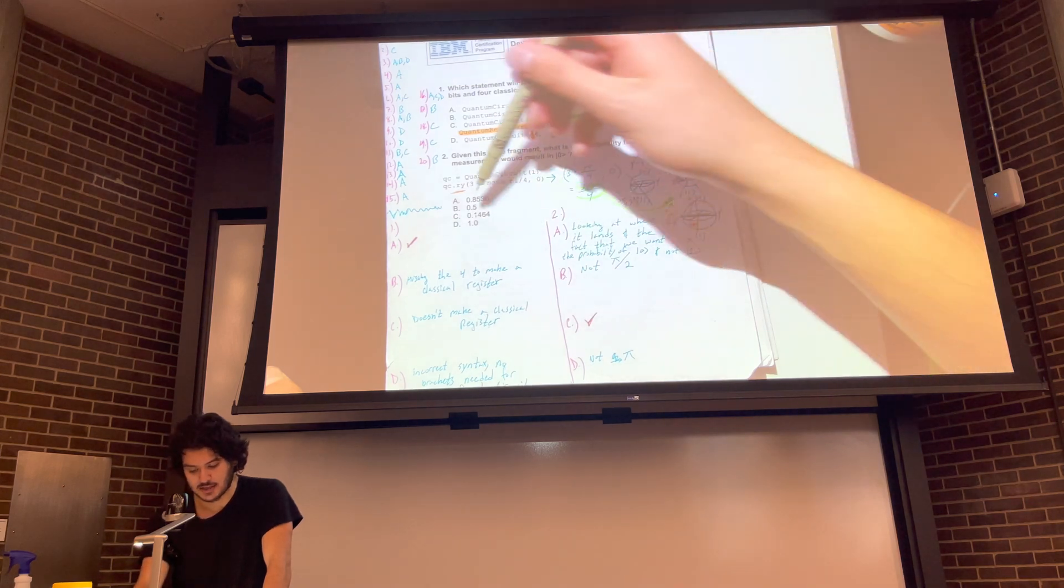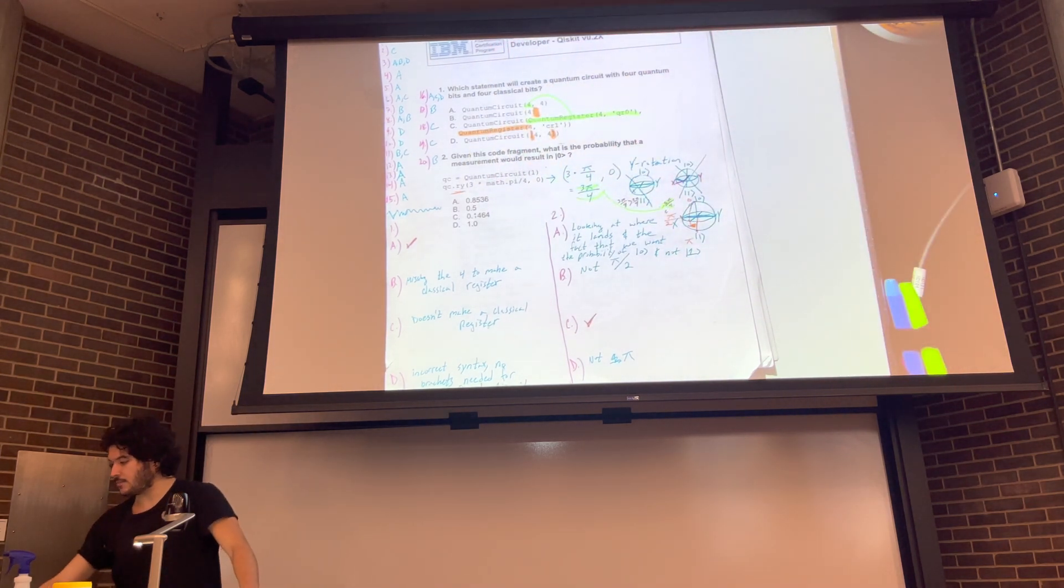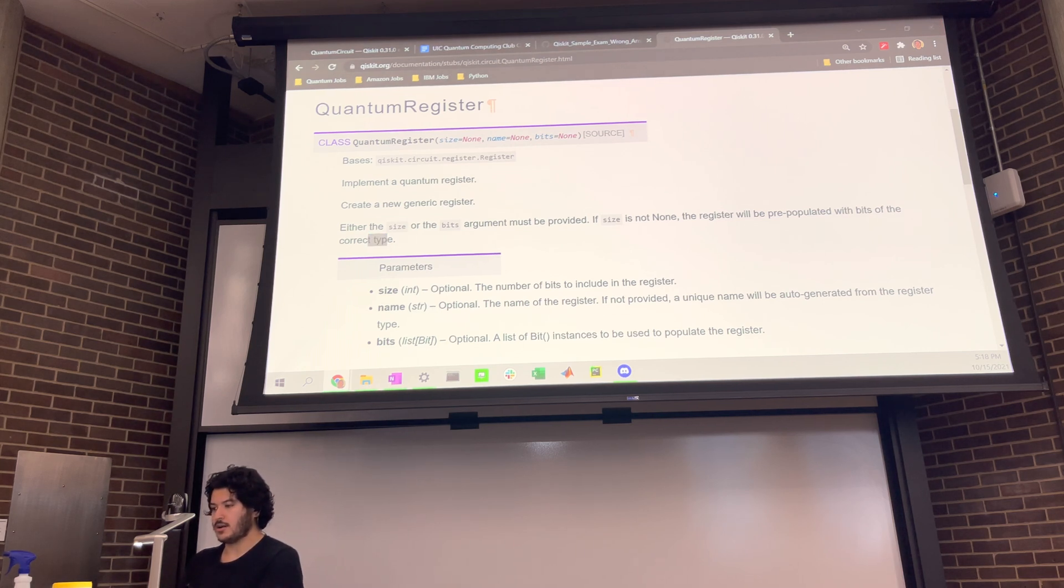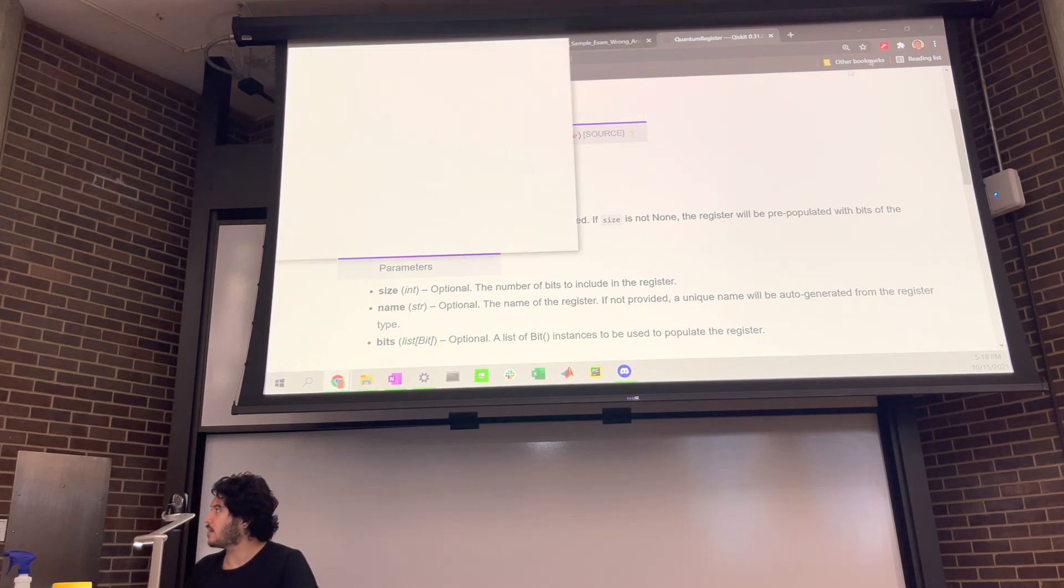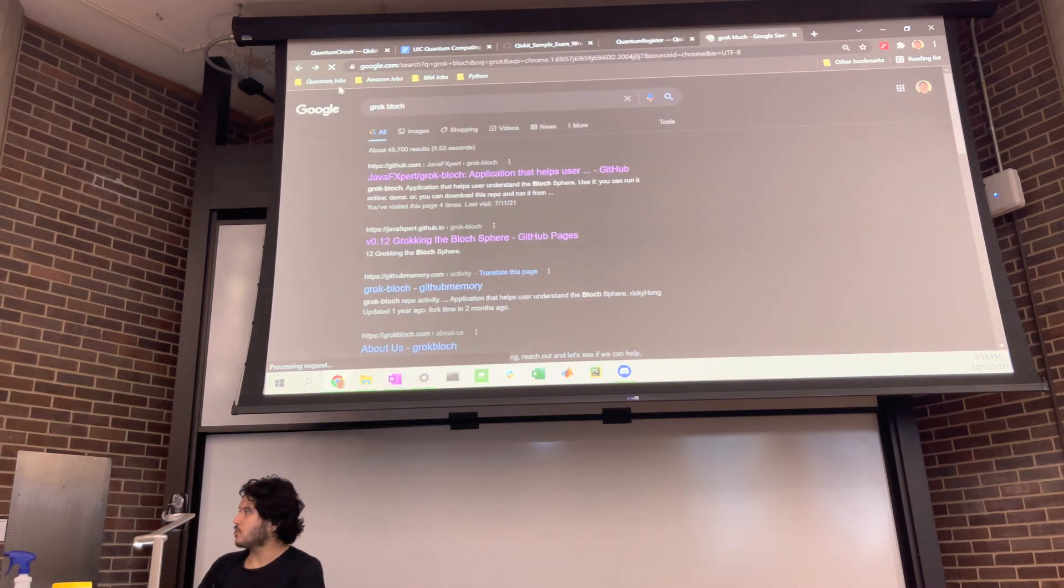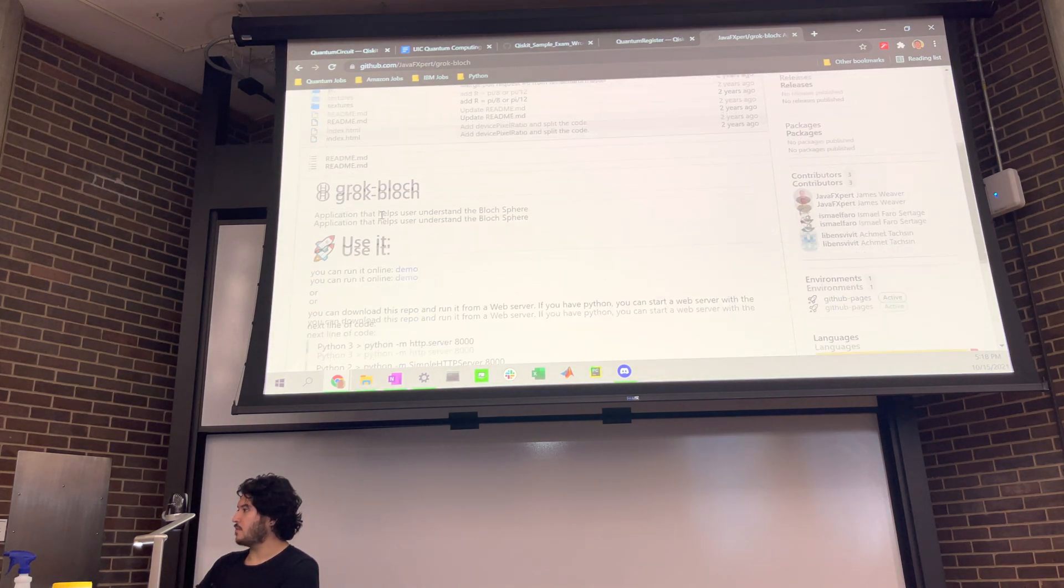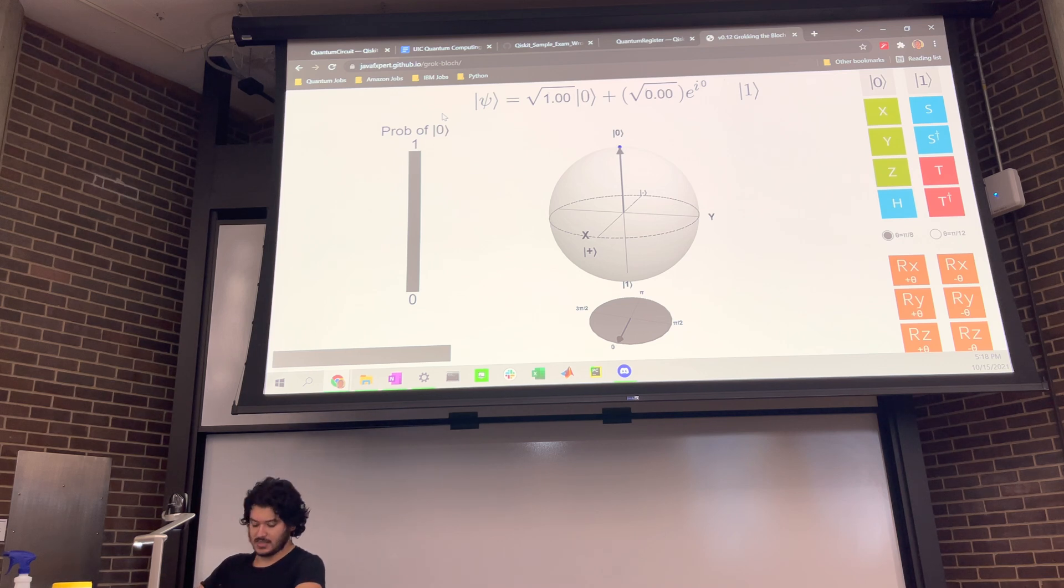So this covers Bloch spheres, which is a way to visualize the quantum state, and then just how to move around the Bloch sphere. I'm going to switch to this screen here. Something that's really useful for learning this stuff. You're going to want to Google Grok Block. James Weaver published this. You'll see his name mentioned in the doc right here. Application that helps user visualize quantum states. Here we go. Grok Block. Application that helps user understand the Bloch sphere. Use it. Run it online. Here we go. Let me redo that. So Google Grok Block. And then click the first link. James Weaver. Here we go. Use it online, the demo.